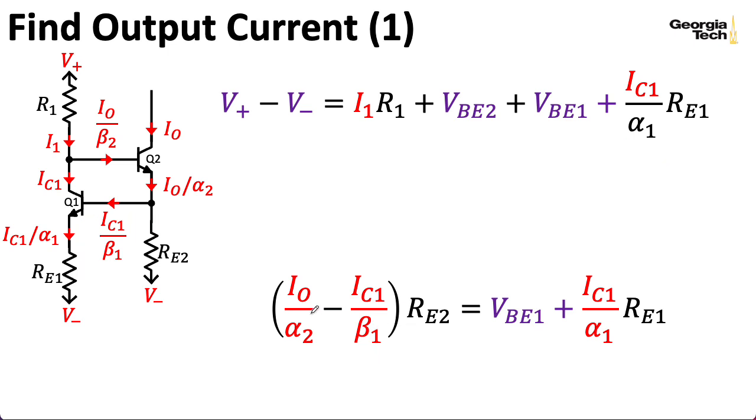All right. So, I have IO, I have IC1, and I have I1. I need another equation. And for that, I can write a Kirchhoff current law equation at this node here. And so, this incidentally has some of the flavor of the derivations we did when looking at current mirrors. So, the current flowing into that node, I1, is equal to the currents flowing out, which is IC1, plus IO over beta2.